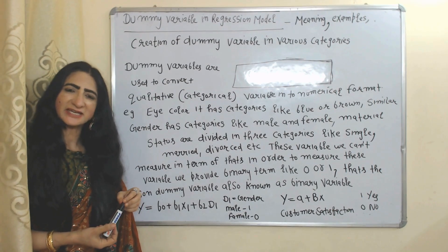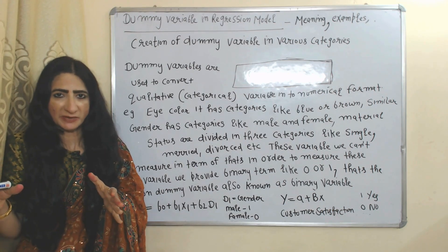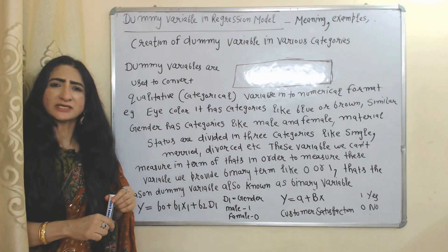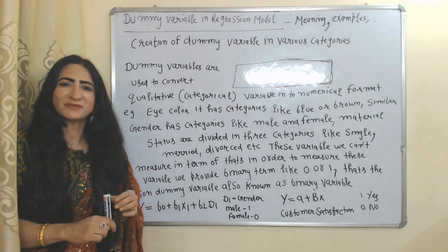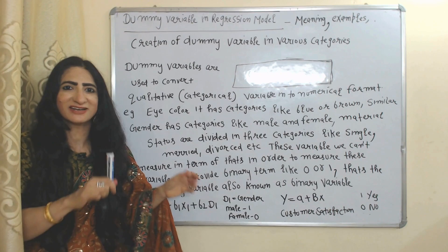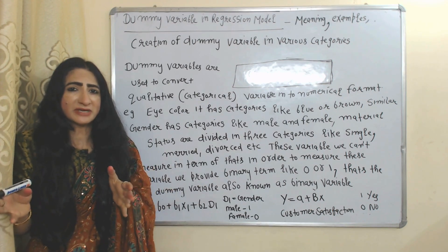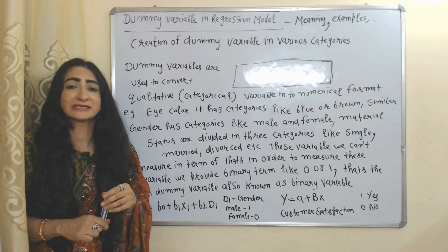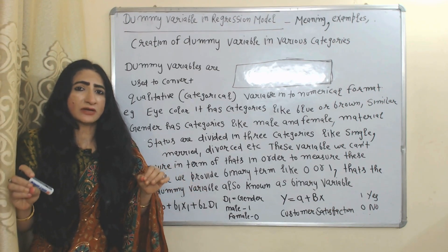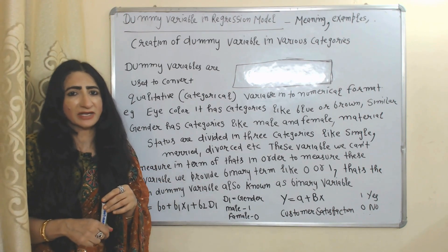Hello everyone, my name is Minister. I hope you all are staying healthy. Today we are going to talk about dummy variables. Some variables you can easily measure in terms of numbers — you can measure income in terms of numbers, you can measure price in terms of numbers. But how will you measure gender in terms of numbers? Gender has categories like male and female. How do you measure marital status in terms of numbers? It has categories like single, married, or divorced. We cannot measure these variables in terms of numbers, that's why these variables are called qualitative or categorical variables.